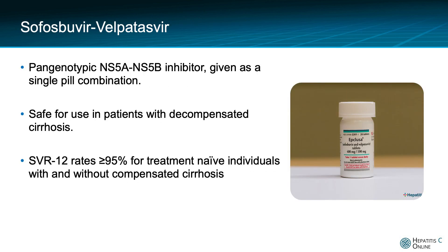Sofosbuvir-velpatasvir is a pan-genotypic NS5A and NS5B inhibitor single-pill combination regimen that has potent activity against hepatitis C. In contrast to glecaprevir-pibrentasvir, it can be used safely in patients with decompensated cirrhosis as it does not contain a protease inhibitor. In the main registration trials, SVR-12 rates for treatment-naive individuals were in the range of 95% or greater, with very few, if any, on-treatment virologic breakthroughs or post-treatment relapses.